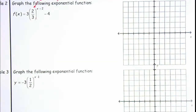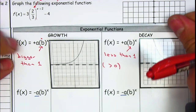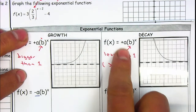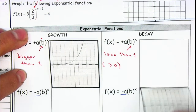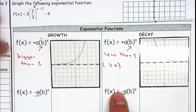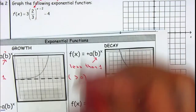If we look at our graphs, this is less than one so it's going to decay. Do we need to flip it? No. We only need to flip it if that front number is negative. So your graph should look something like this.